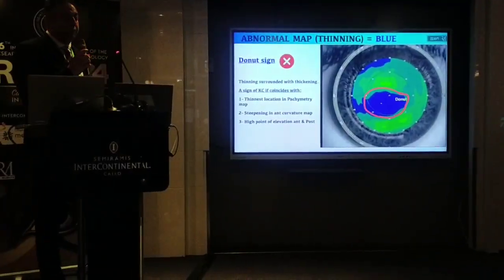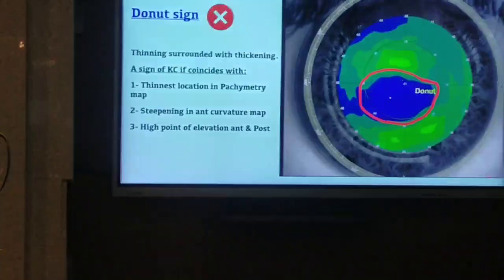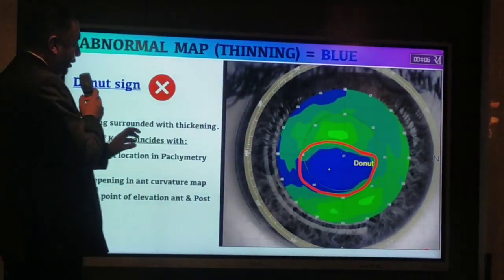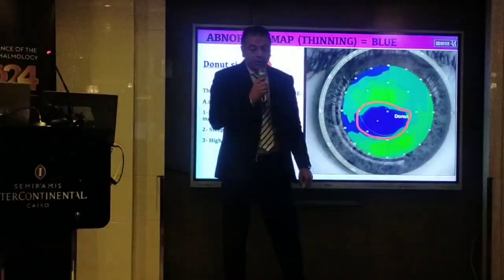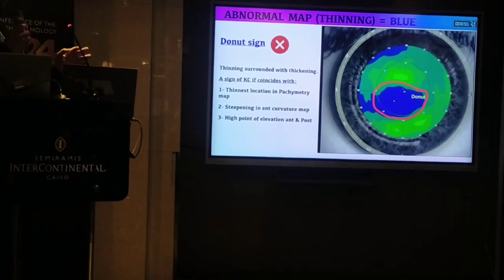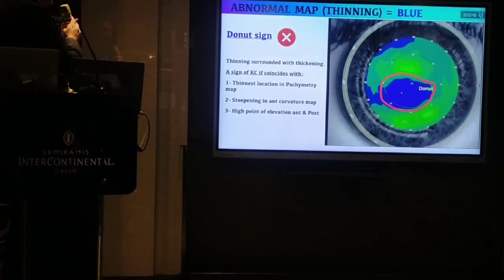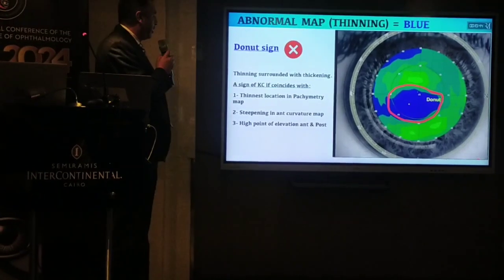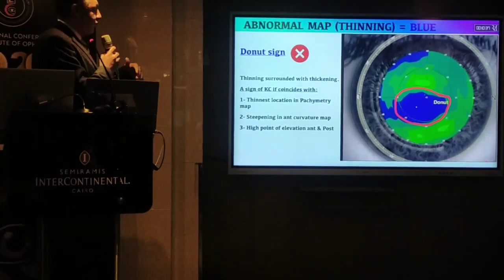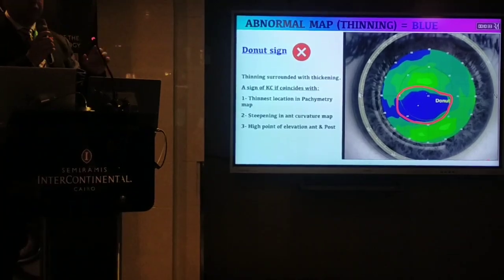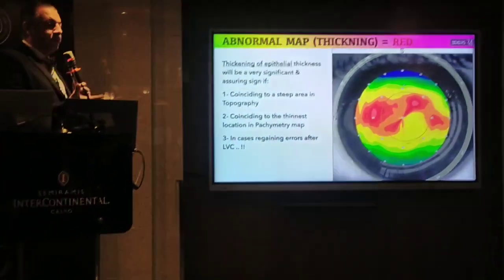Now look at the abnormal maps. The most important one is the donut sign formation, which is an alarming sign. The donut means thinning — an island surrounded by thickening around it, like an island and its borders. The characteristic sign should be thinning surrounded by a border of thickening. This thinning surrounded by thickening is a sign of keratoconus if it coincides with the thinnest location in the pachymetry map, the steepening in the anterior curvature map, and the high points of elevation — especially posterior elevation.